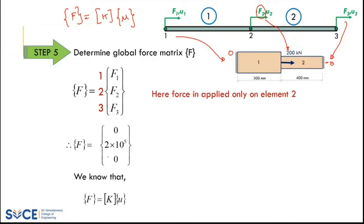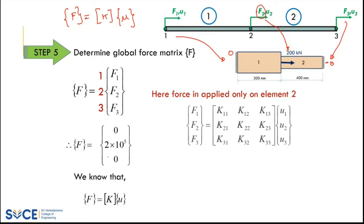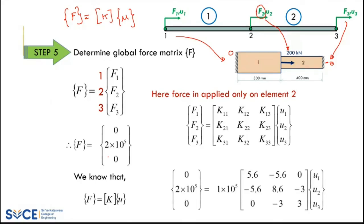We now write the complete equation: [F1; F2; F3] = K (global stiffness matrix) × [U1; U2; U3], with F = [0; 2×10⁵; 0] and K already identified. The unknowns U1, U2, U3 are what we need to find.